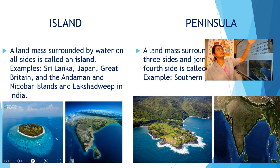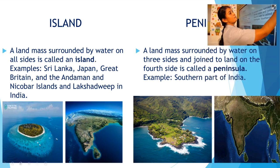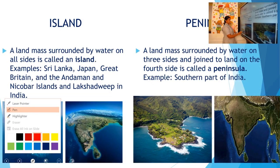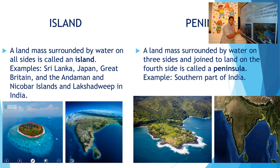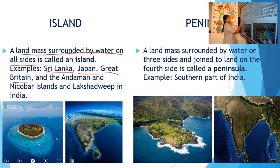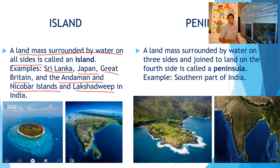Next landforms are island and peninsula. An island is a landmass surrounded by water on all sides. Can you see this picture? Here is a landmass which is surrounded by water on all sides — this is an example for an island. Examples include Sri Lanka, Japan, Great Britain, Andaman and Nicobar Islands, and Lakshadweep. Sri Lanka is surrounded by water on all sides, so it is an island.